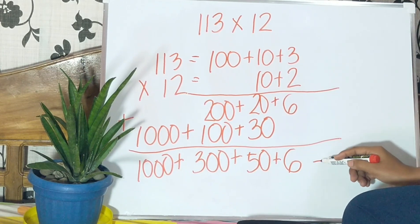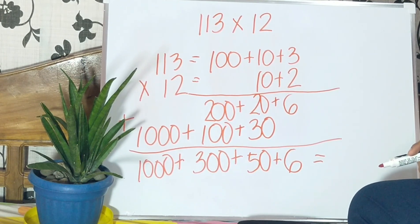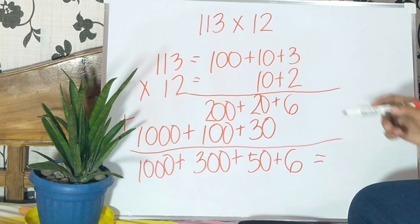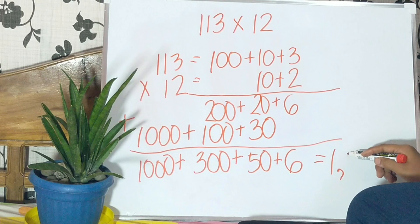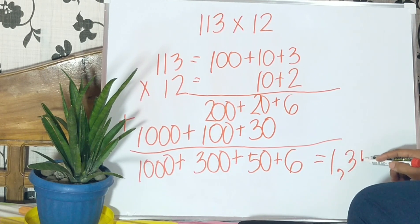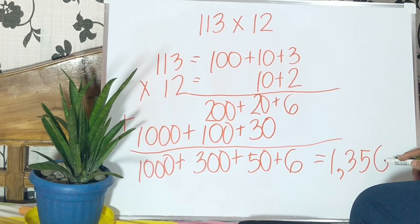So, our product of 113 multiplied by 12 is 1,356.